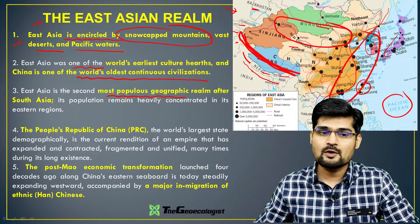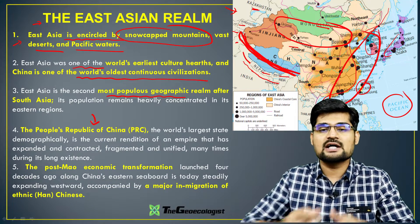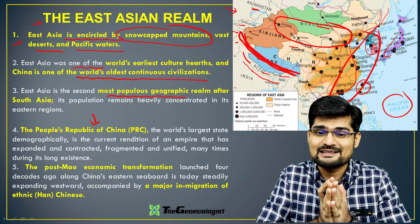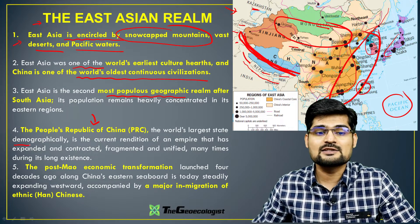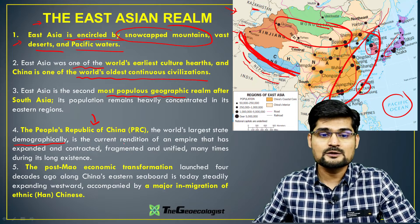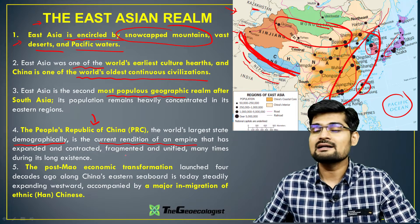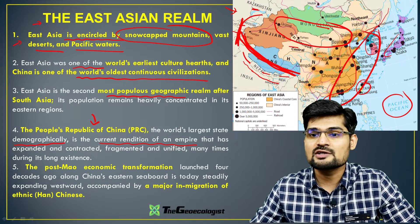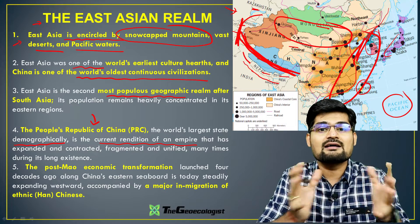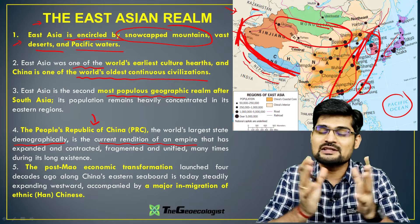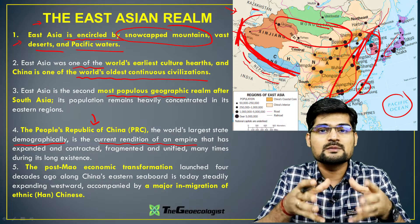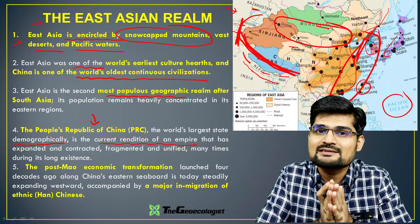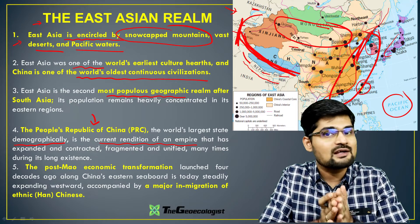The People's Republic of China, PRC, is the heart of this particular region — the world's largest demographic country and the current rendition of an empire that has expanded from Central Asia to the Pacific coast. It is the largest empire if you observe from ancient times, and today the People's Republic of China covers a huge area almost equal to the United States of America.